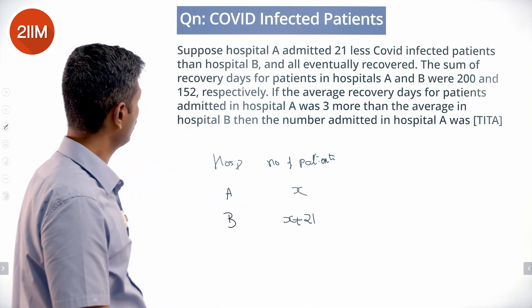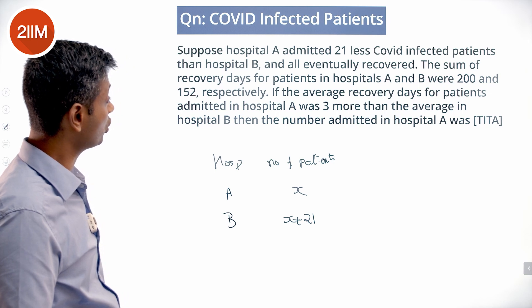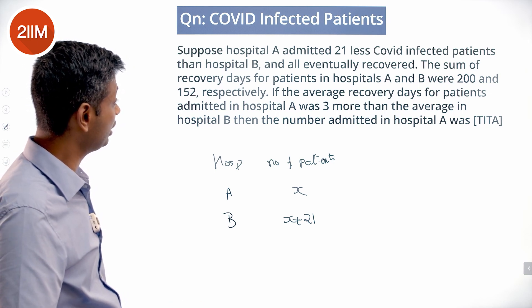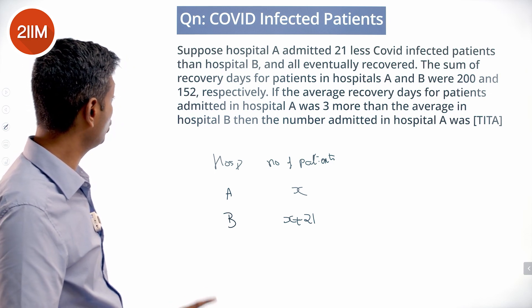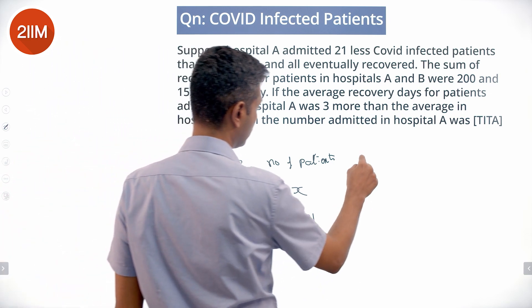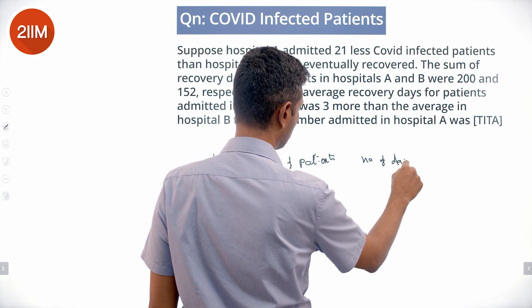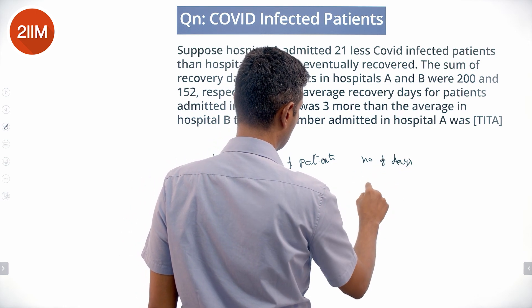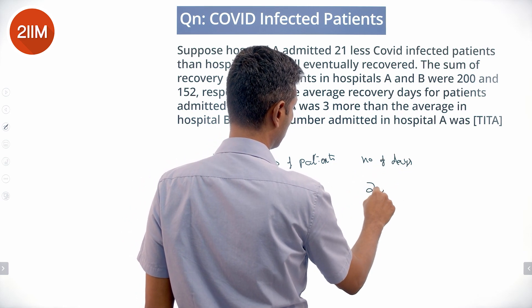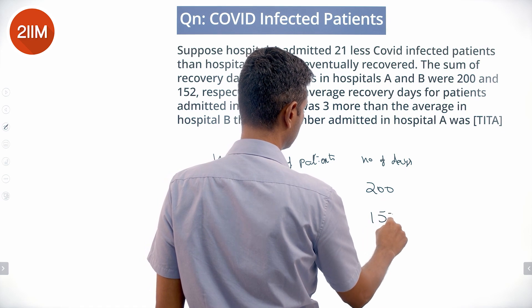The sum of recovery days for patients in hospitals A and B were 200 and 152 respectively. So the number of days: the sum for A was 200, and for B was 152.